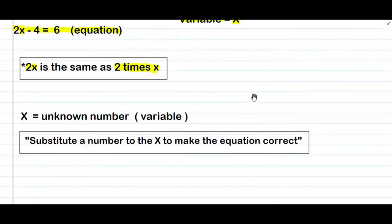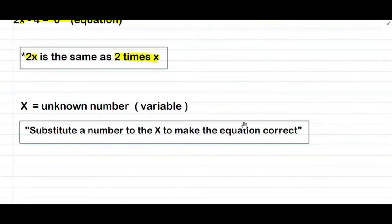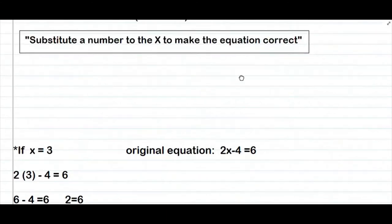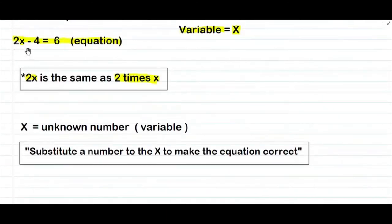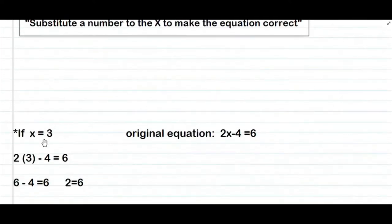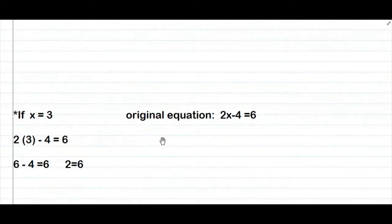Ang gagawin natin is to substitute a number to the x to make the equation correct. Papalitan natin ngayon ng number yung x. Hanapin natin yung number na nire-represent ng x para maging correct yung equation. Ang gagawin natin: yung value ng x ay 3. Papalitan natin ng 3 yung x dito. Kapag ginawa natin yun, ang mangyayari is 2 times 3.